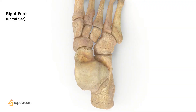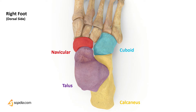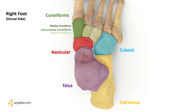The tarsal bones are seven in number and these are: the calcaneus, the talus, the navicular, the cuboid, and the cuneiforms — which are further divided into three bones: the medial, the intermediate, and the lateral cuneiform bone.